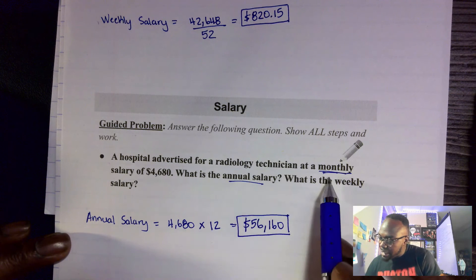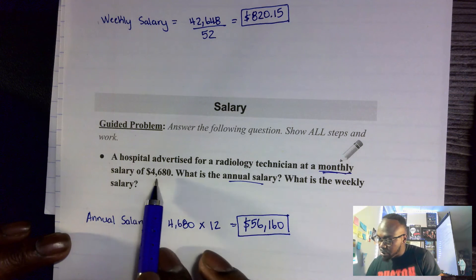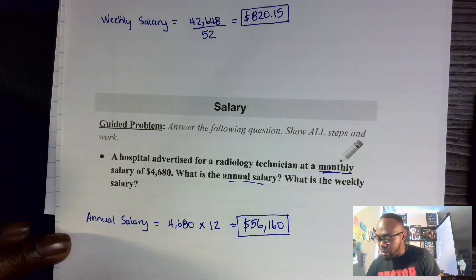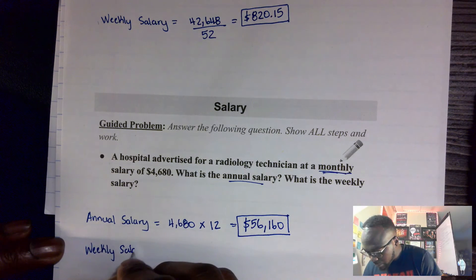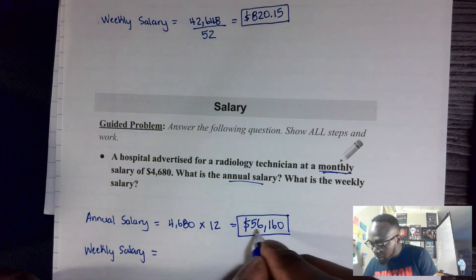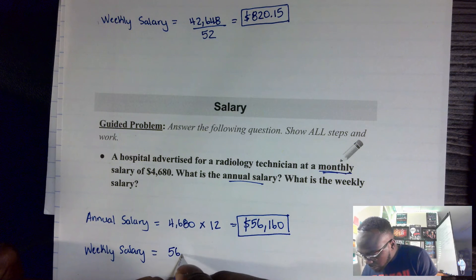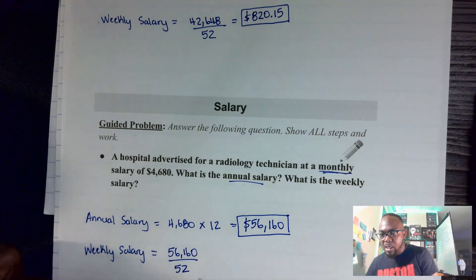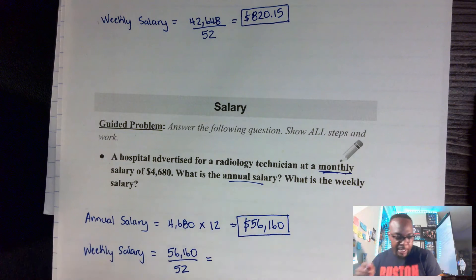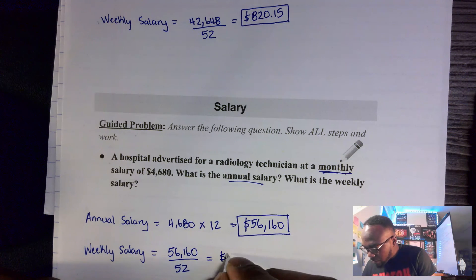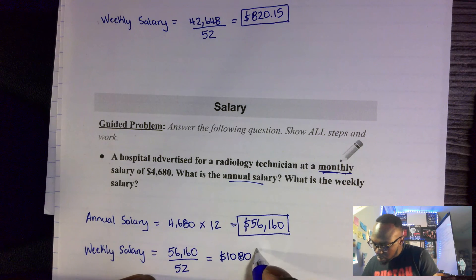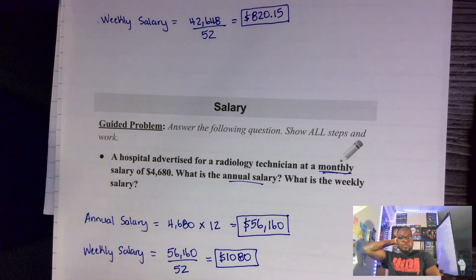Now that I have the annual salary, I can find the weekly. Be careful — you cannot just divide the monthly by 4. The weekly salary equals $56,160 ÷ 52, which gives a weekly salary of $1,080.